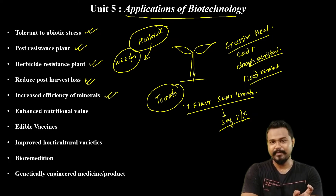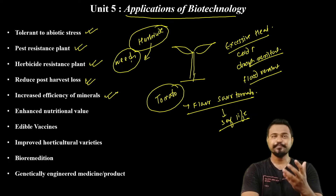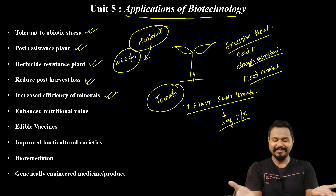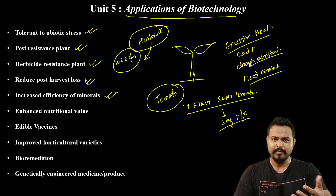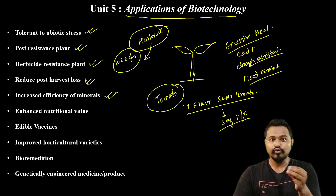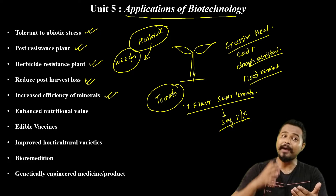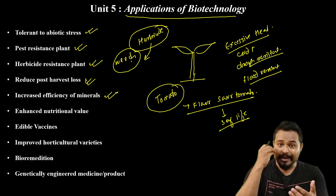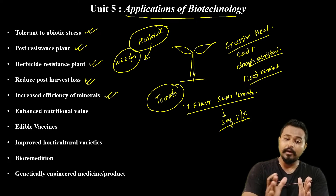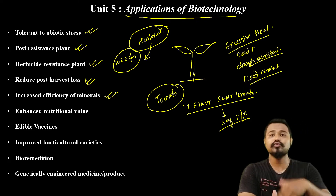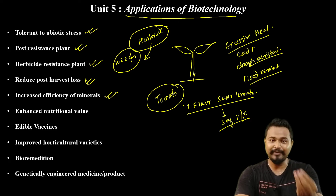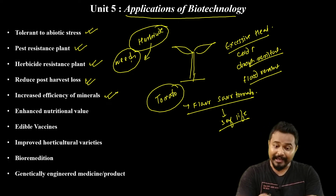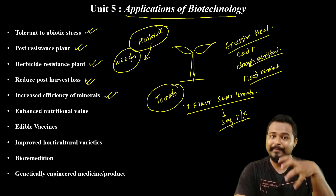Next is increased efficiency of minerals. Increased mineral efficiency means the plant uses minerals more effectively. Minerals like iron, potassium, sulfur, nitrogen — plants need these to grow. We can develop mineral-efficient plants using biotechnology so that they can absorb and utilize minerals like nitrogen and potassium more efficiently.